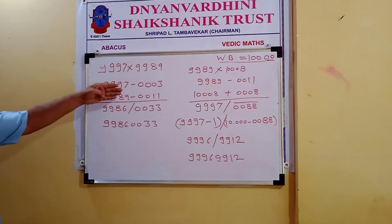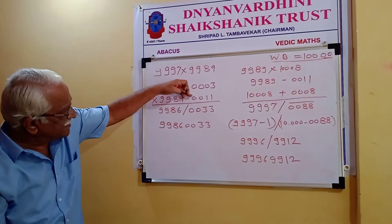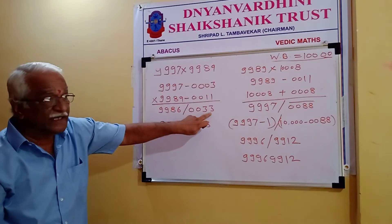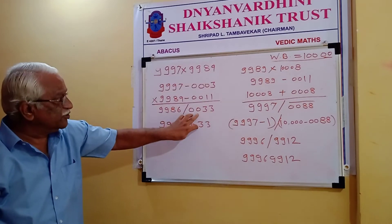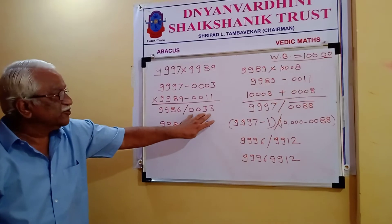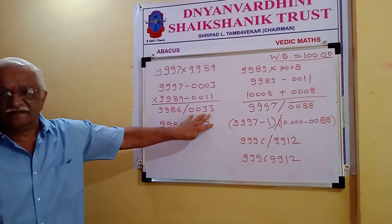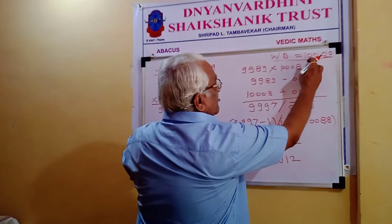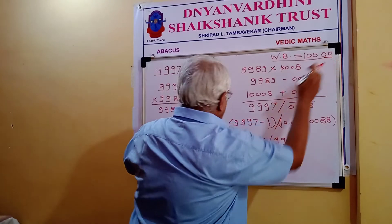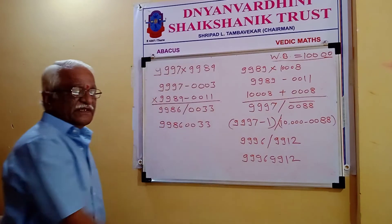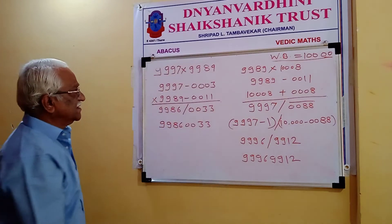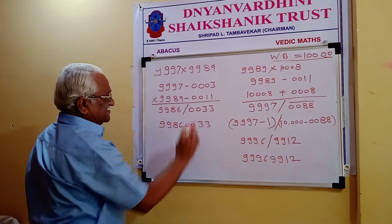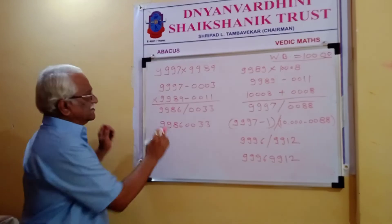Now multiplying these two differences: 11 into 3 is 33. But we have to write 4 digits because there are 4 zeros. So we write 0,033.